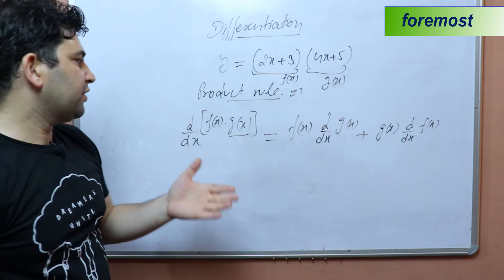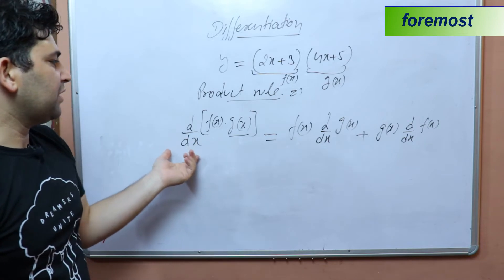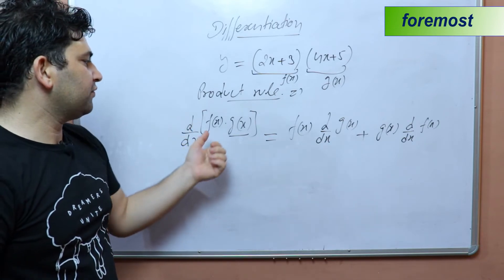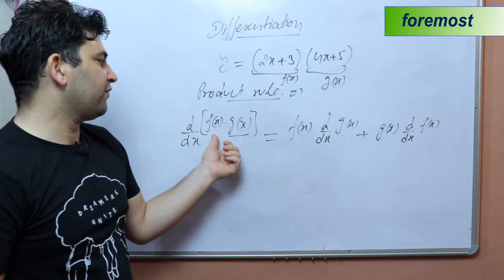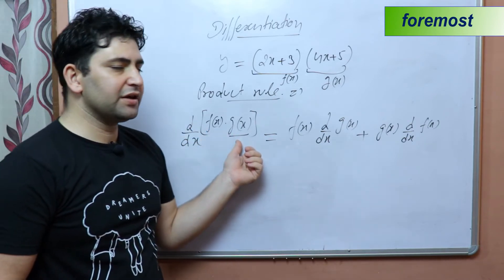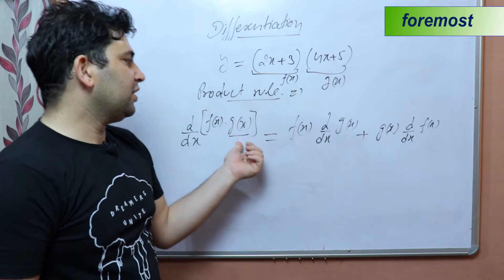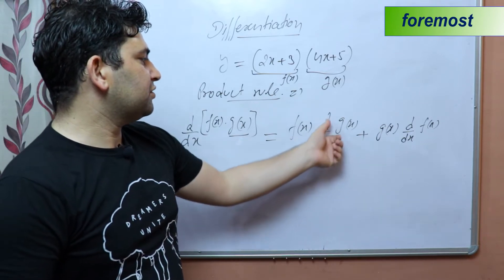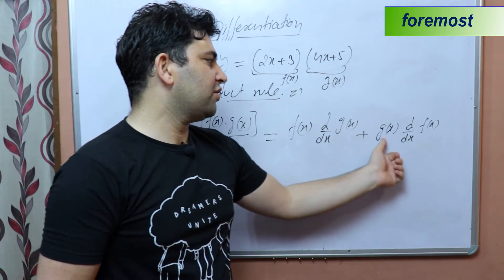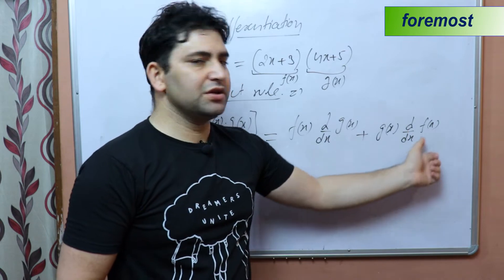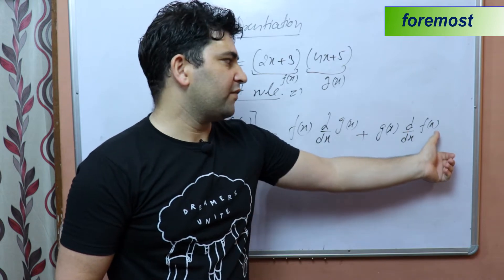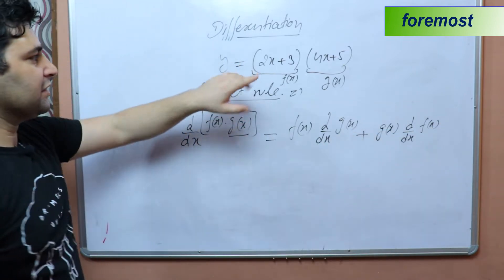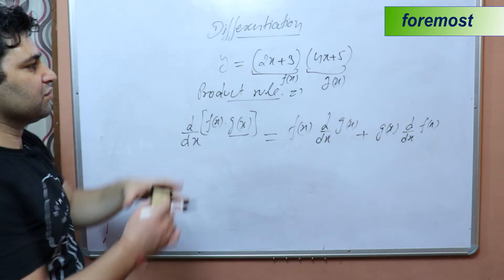Repeating once again: d/dx of f(x) times g(x) equals f(x) into differentiation of g(x), plus g(x) into differentiation of f(x). Now let us solve equation number one using this product rule.